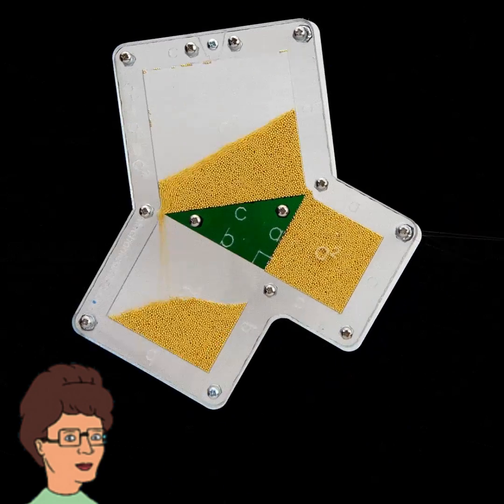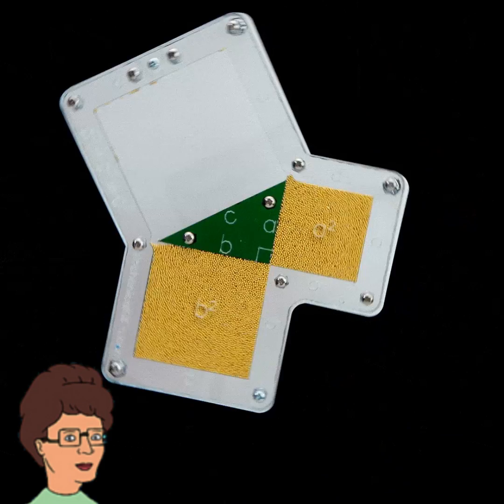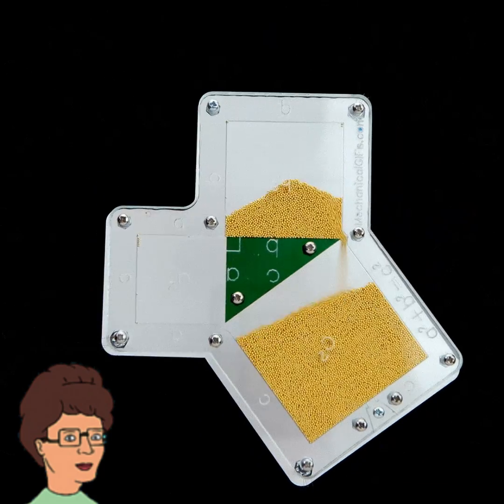This is a physical demonstration of the Pythagorean Theorem. In mathematics, squaring means multiplying a number by itself.